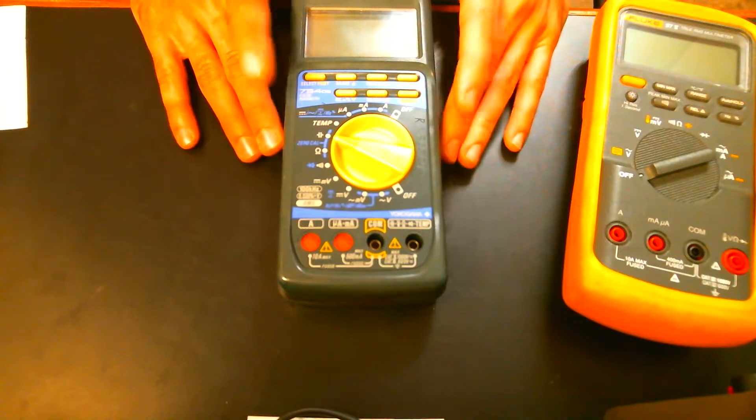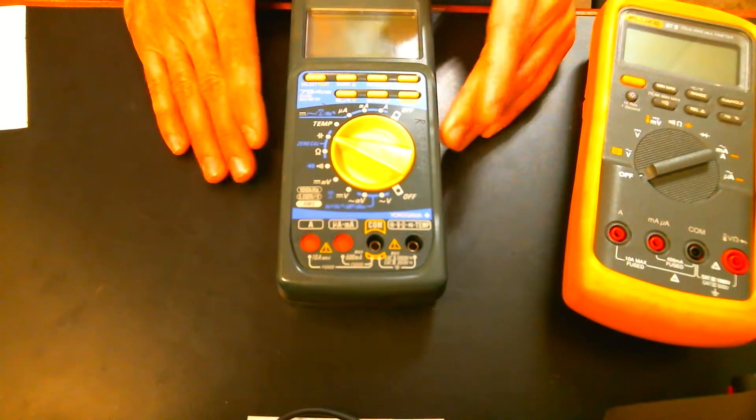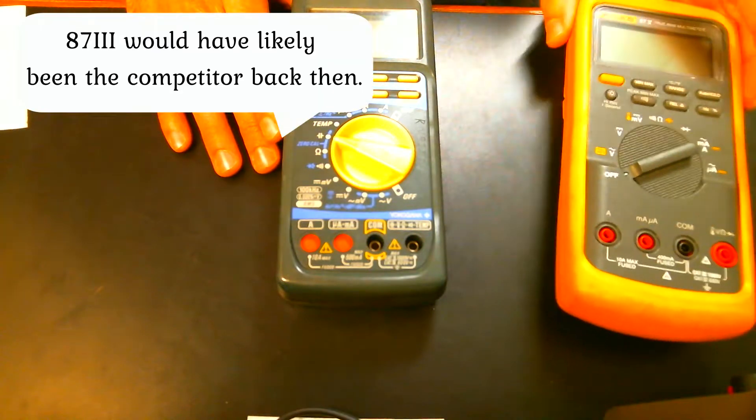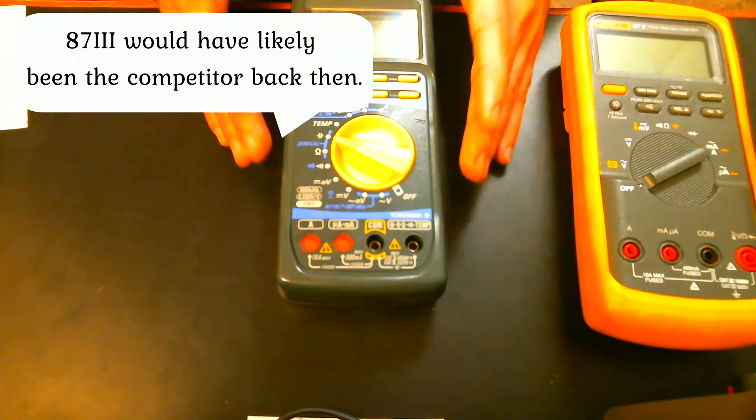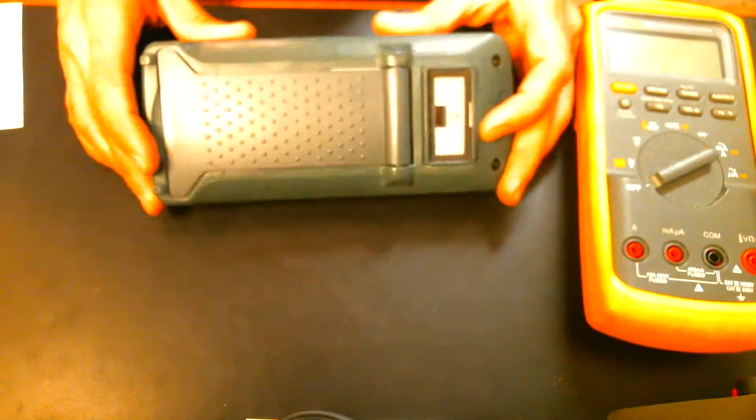We can change that connector out and have a really good high-end meter. These meters sold, they're discontinued now, but they originally sold for about 400 bucks, which is competitive to the 87.5. So I think it's going to be a real high-quality meter. It's made in Japan. It's not made in China. I believe there are some Yokogawas nowadays that are made in China, but this one was made in Japan.